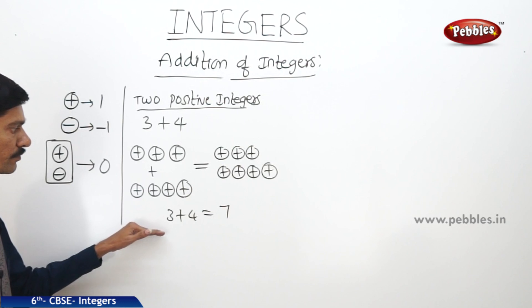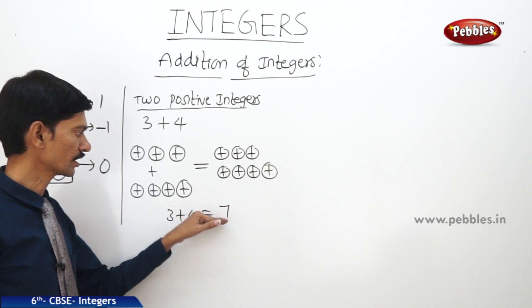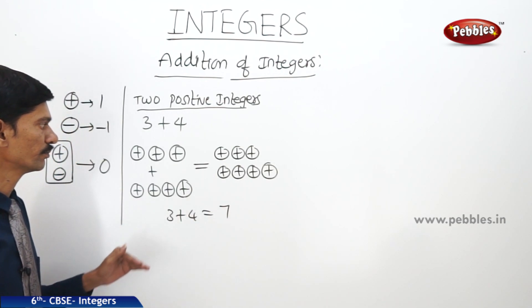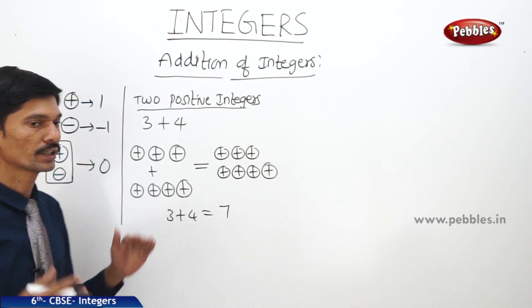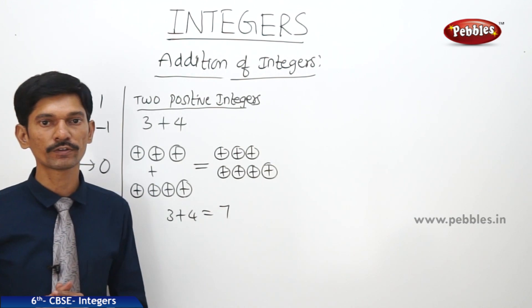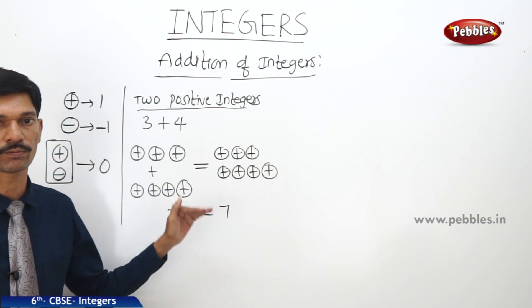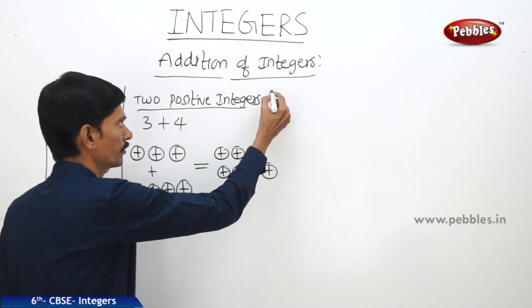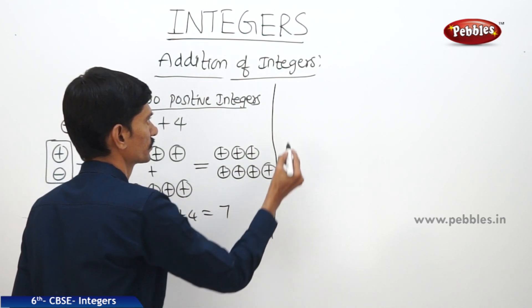This means the sum of any two positive integers is again a positive integer. When we add any two positive integers, we get the sum also as a positive integer. Now let us add two negative integers.